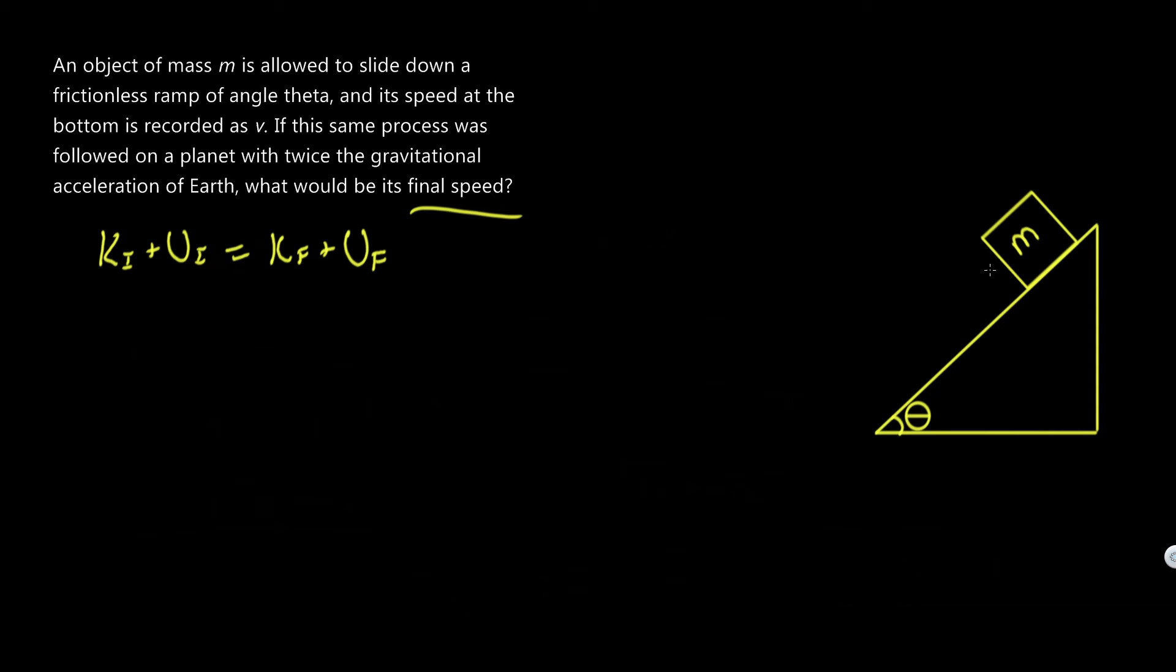Well, when the box is initially sitting there, does it have any movement? No, obviously not. So there's no kinetic energy. And at the end, will the box have any potential energy? And again, that's no, because it's at the bottom here, it's no longer at a relative height. So that leaves us with u initial equals k final.